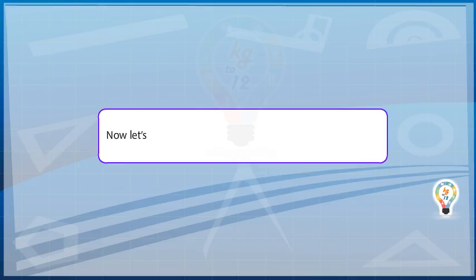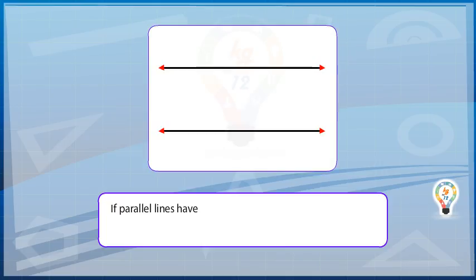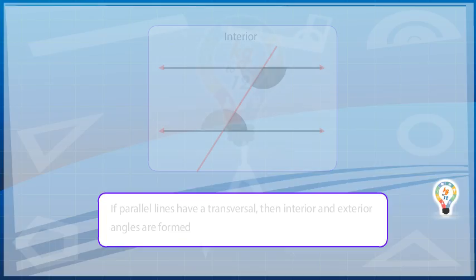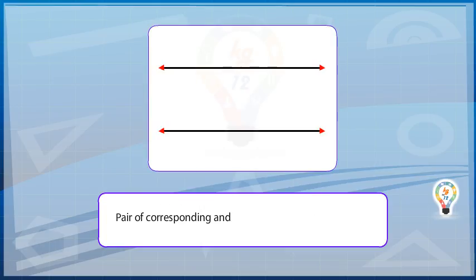Now let's understand some properties related to parallel lines. If parallel lines have a transversal, then interior and exterior angles are formed. Pairs of corresponding and alternate angles are also formed.